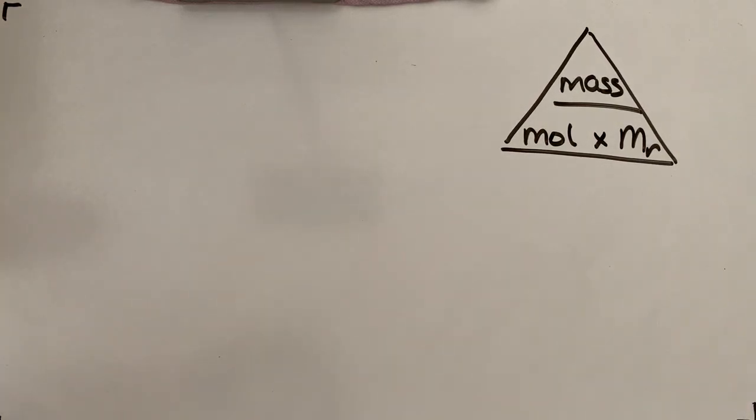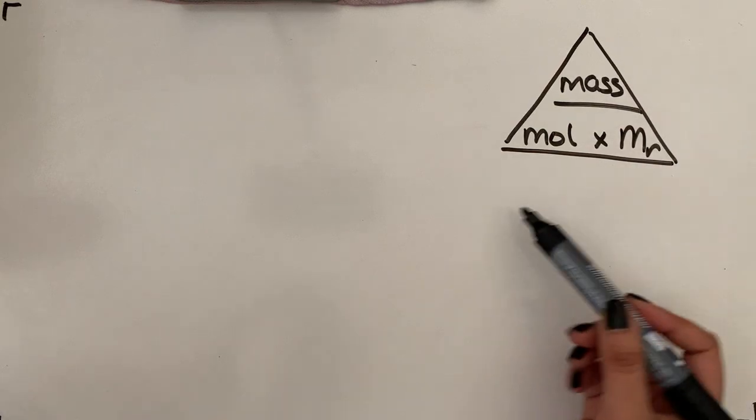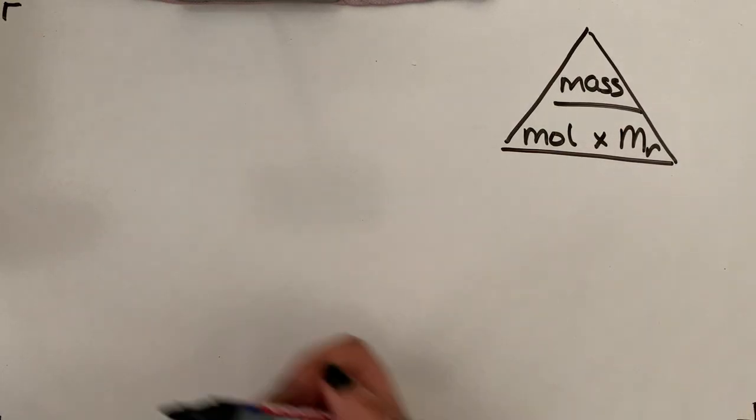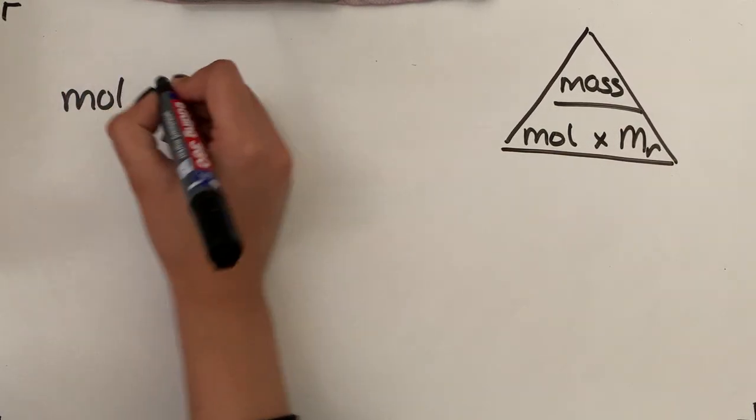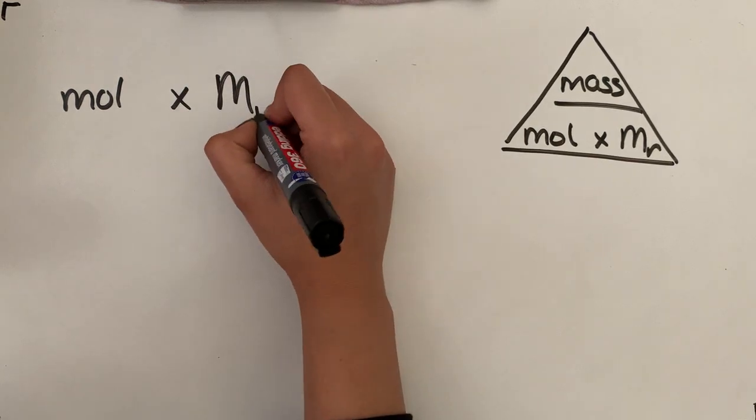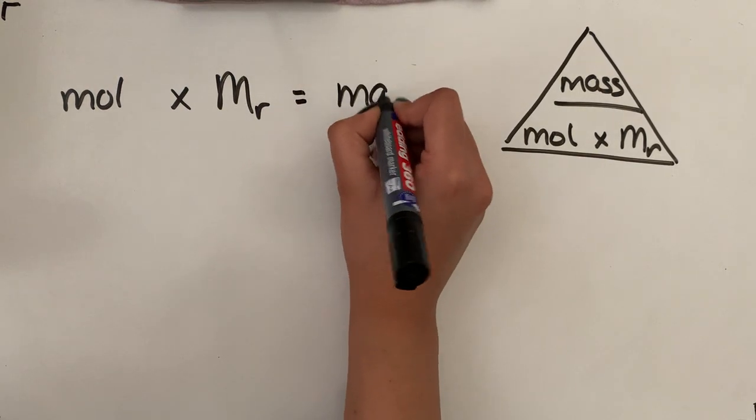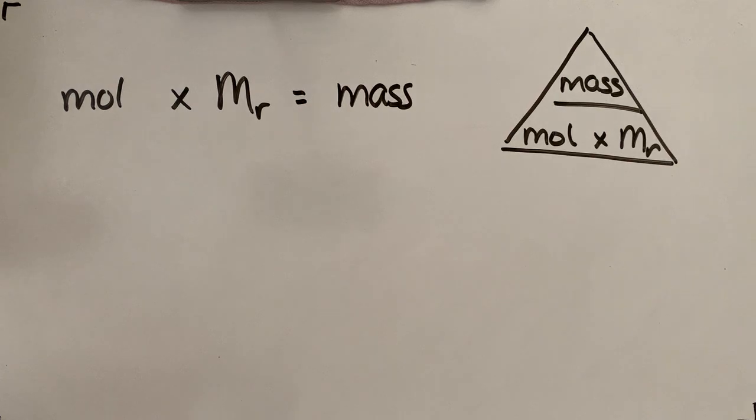So if we're being asked to convert moles into mass, we are calculating mass. So you do moles times the molar mass. So moles times molar mass is going to give you the mass in grams.